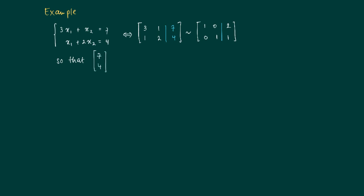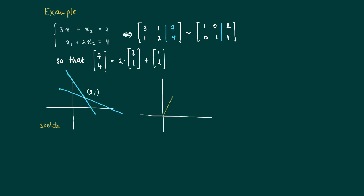Another way of saying this is that the vector [7,4] equals 2 times, since x1 equals 2, it is 2 times the first column and 1 times the second column. So here we draw the lines, actually we have two lines here. And solving the system amounts to finding the point of intersection.